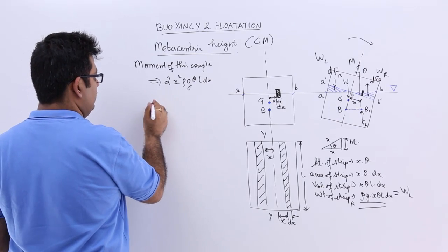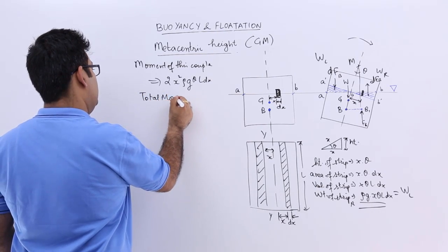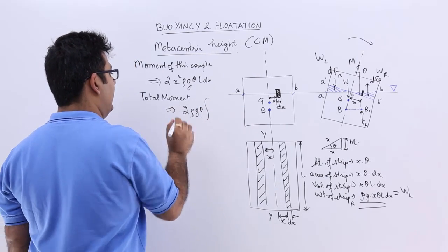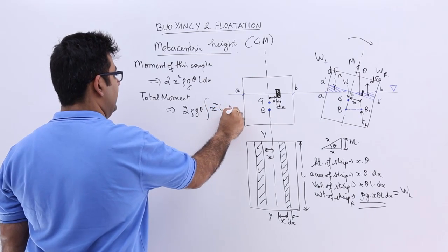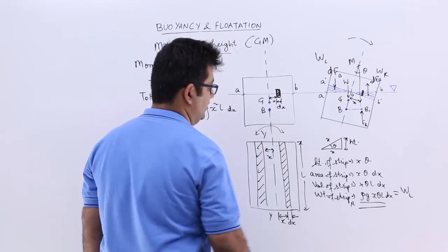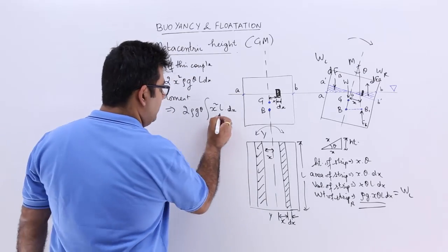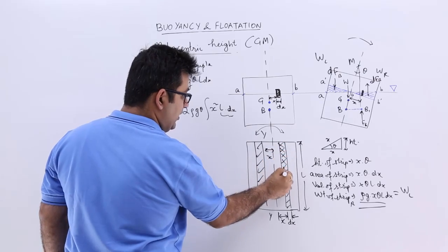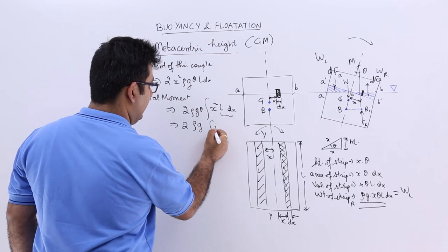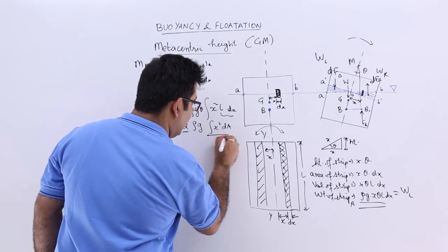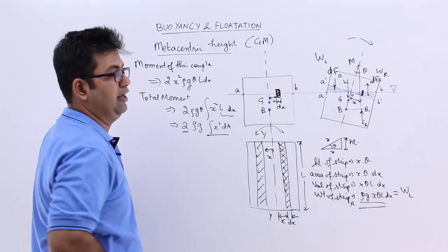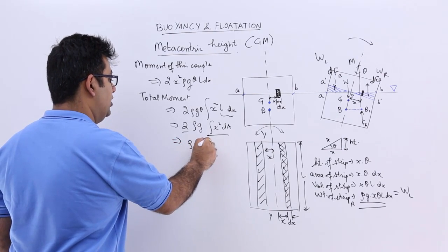For the entire body, we integrate. The total moment equals the integral, taking out rho·g and theta, giving rho·g·theta times the integral of x²·l·dx. The term l·dx is the area of the strip seen from the top, so let's call it dA. We get 2·rho·g times the integral of x²·dA. Since 2 times the integral of x²·dA is the second moment of area about the YY axis — accounting for both sides — this becomes rho·g·I_yy.